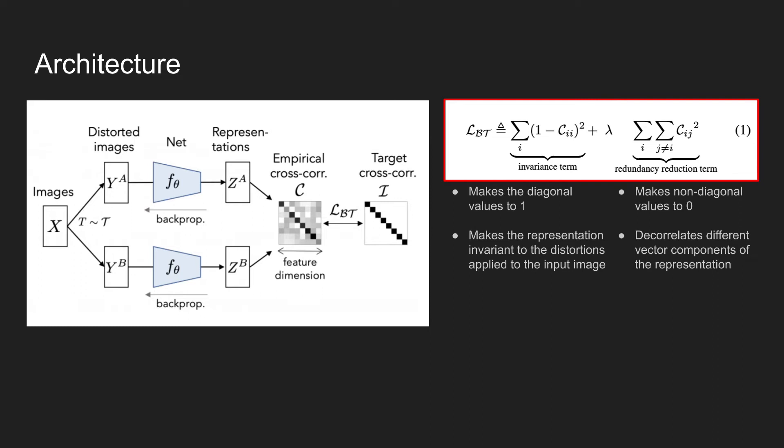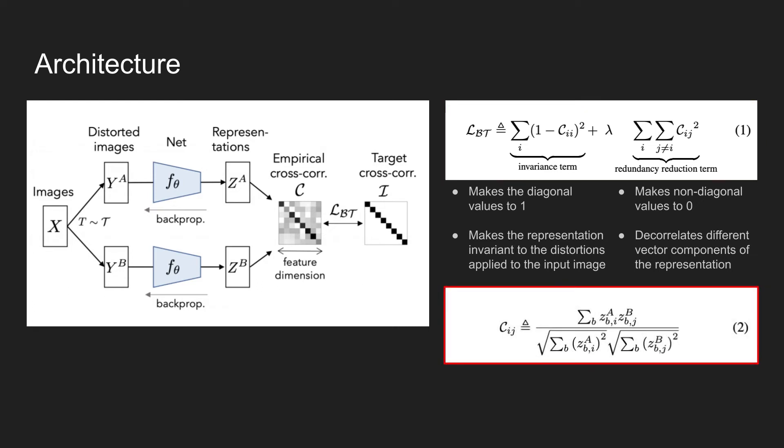Authors state that this decorrelation reduces the redundancy between output units to let the units contain non-redundant information about the sample. The Cij in the lower equation shows the calculation of each element in the cross-correlation matrix. Small letter b here indices batch samples and ij are the indices of the z-vector.